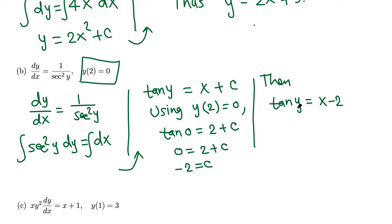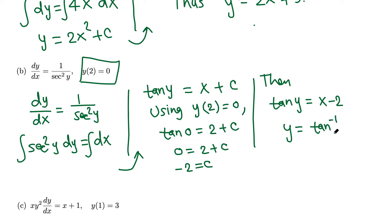Going back, tangent y equals x plus c where c is negative 2. Taking the tangent inverse of both sides to isolate y, the final answer is y equals arctangent of (x minus 2).